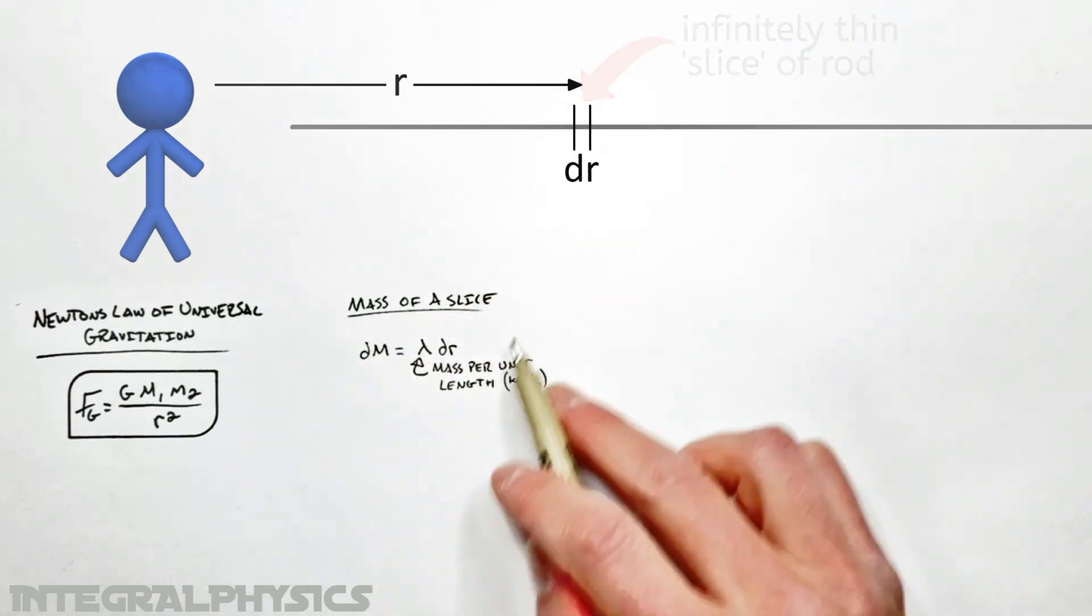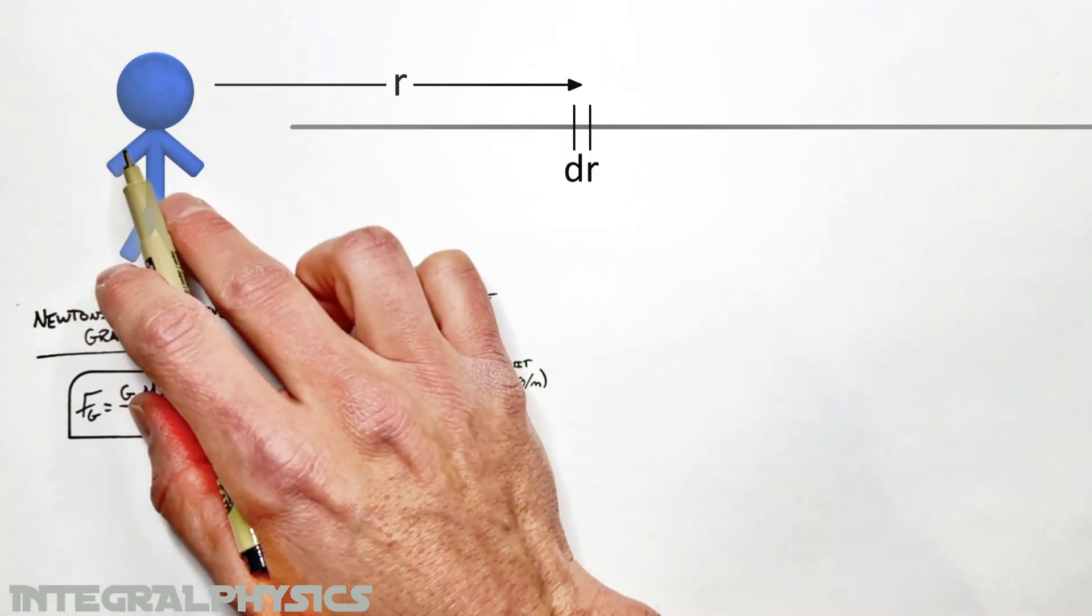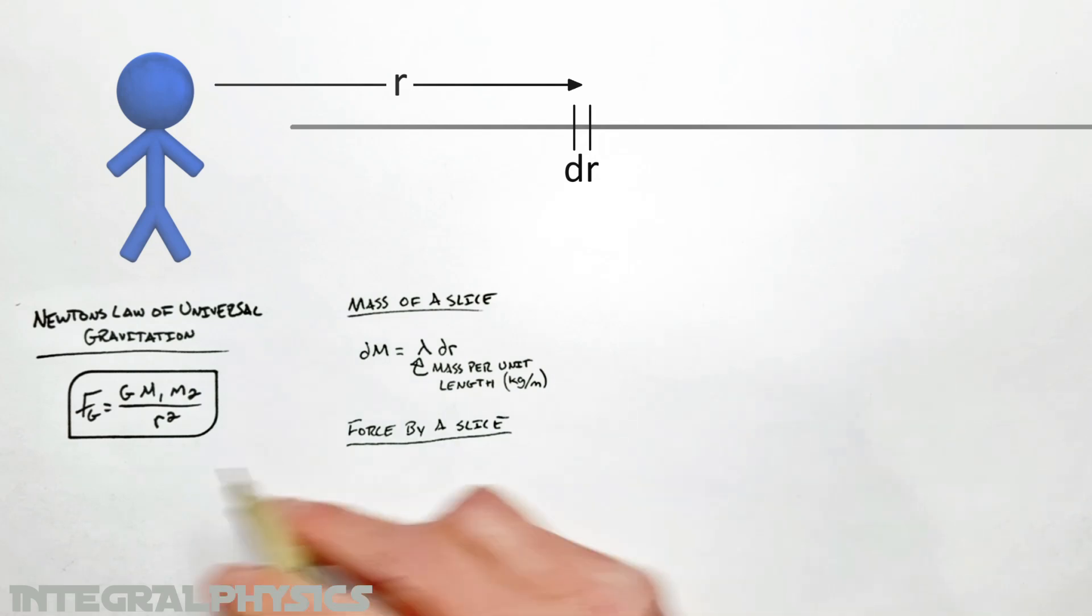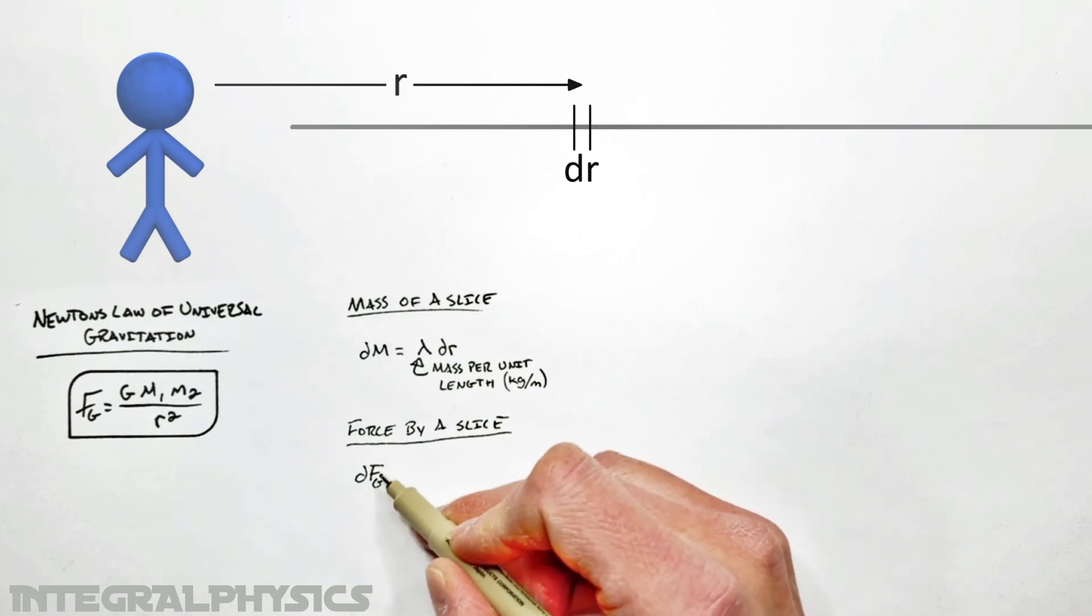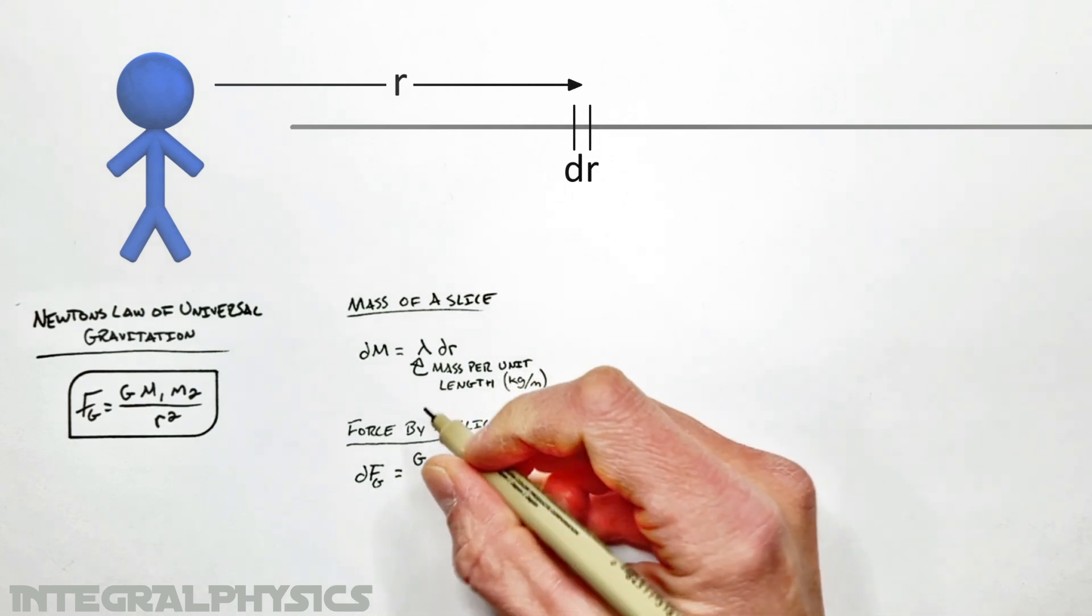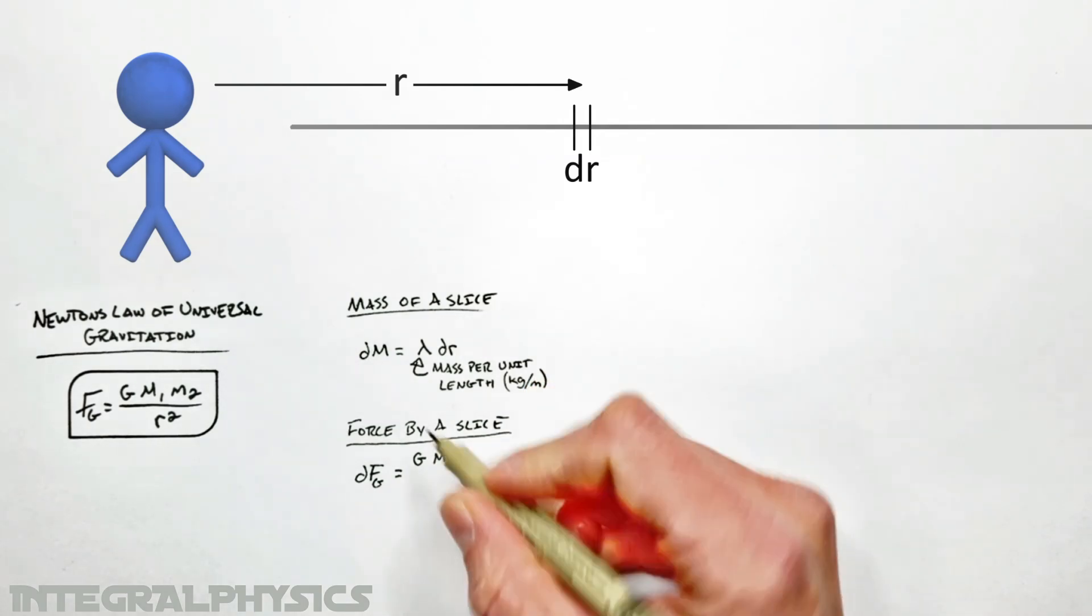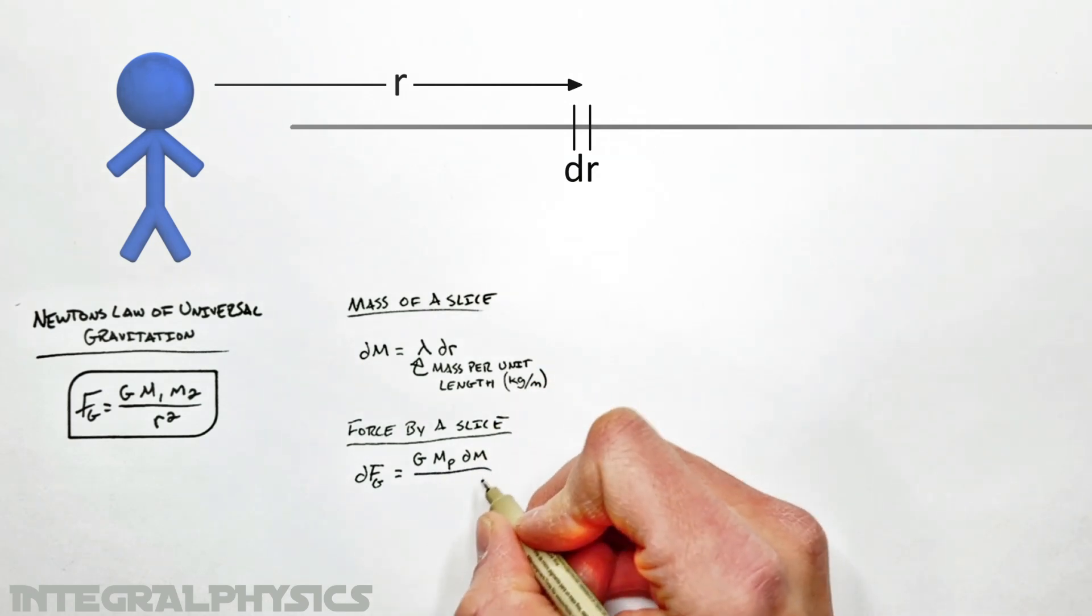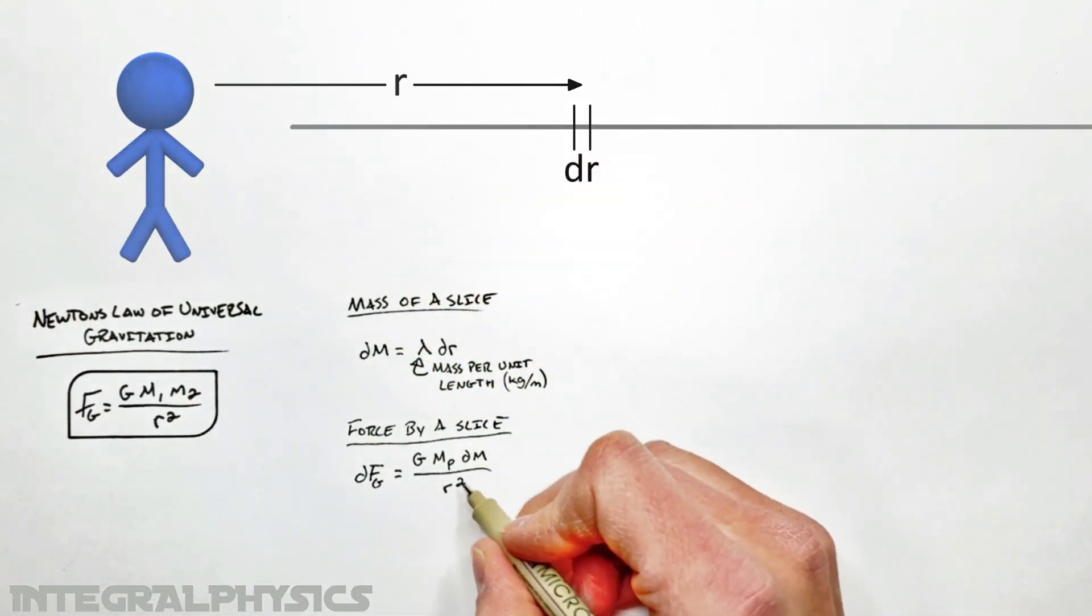And so what we're going to do here now is take this mass and look at how much gravitational force there is between just this little slice right here and our particle over here using this equation for gravity. So the force by a slice is going to be, going back to our equation, I'm going to call this dFg. It's not the total force by gravity. It's an infinitely small piece or portion of the total force by gravity. That's going to be equal to g times the mass of our point mass over here. I'm going to call that mp, or p for point mass, multiplied by dm, the mass of our slice. That's going to be divided by r, the distance between our point mass and our slice. That's squared.